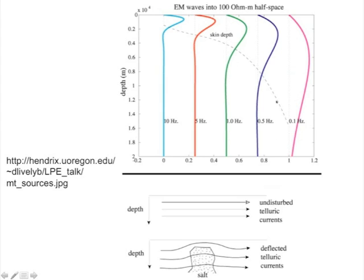That same ionospheric change produces what are called telluric currents, which propagate usually horizontally through the ground. They tend to be stronger close to the surface than at depth according to the skin depth. If they're propagating through a crustal section with about the same resistivity throughout, they'll propagate pretty much horizontally. But where those telluric currents propagate through a salt dome — where the salt is massive and not fractured and full of water — the salt acts as an insulator and deflects those telluric currents. That deflection is what the magnetotelluric method looks for.